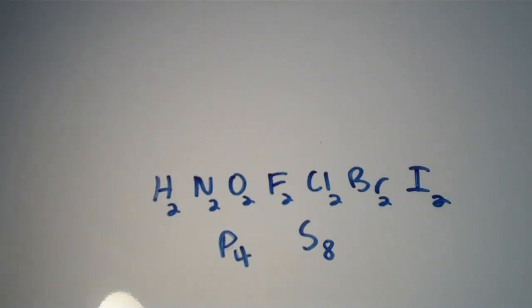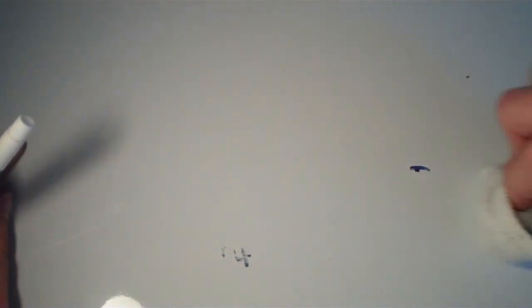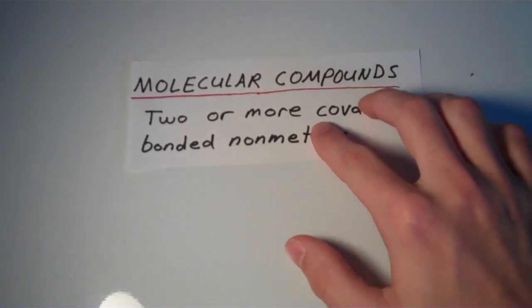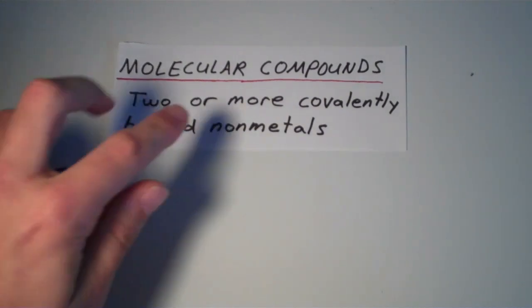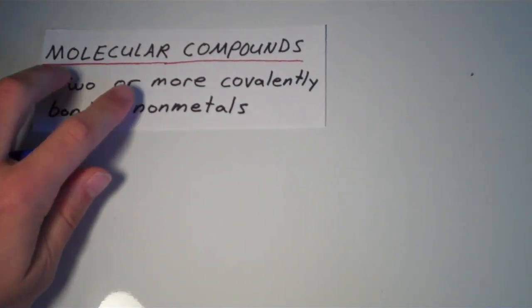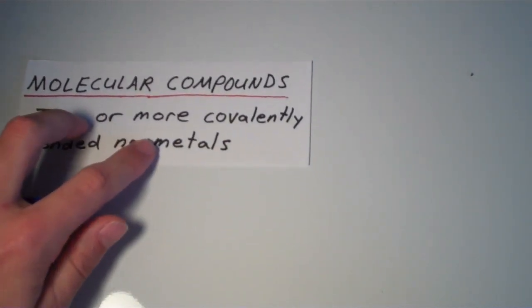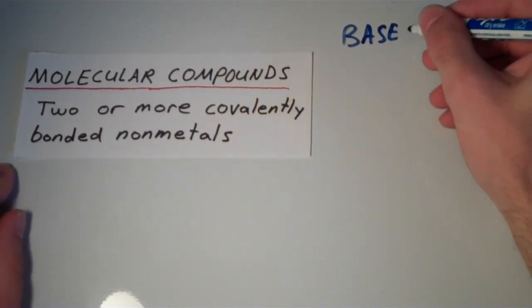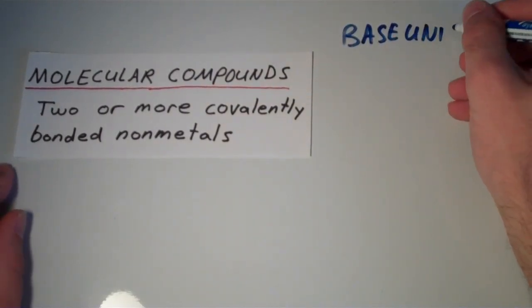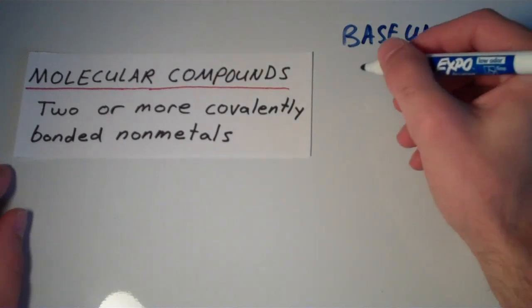So now let's talk about molecular and ionic compounds. Molecular compounds are simply two or more covalently bonded nonmetals. So like water, for instance, that is a molecular compound.